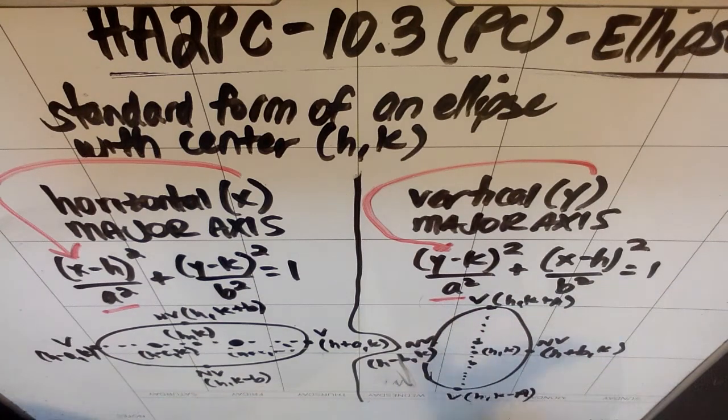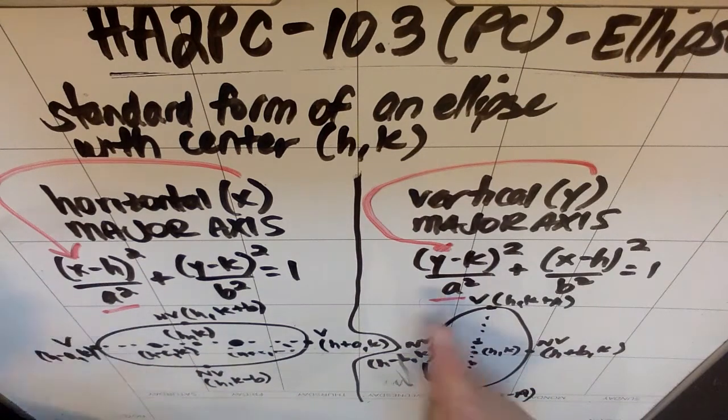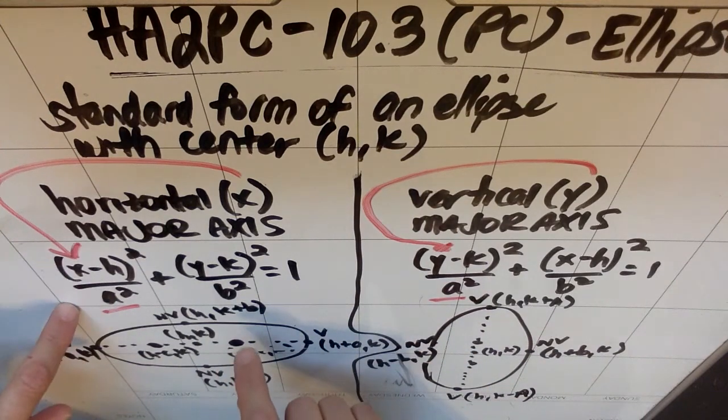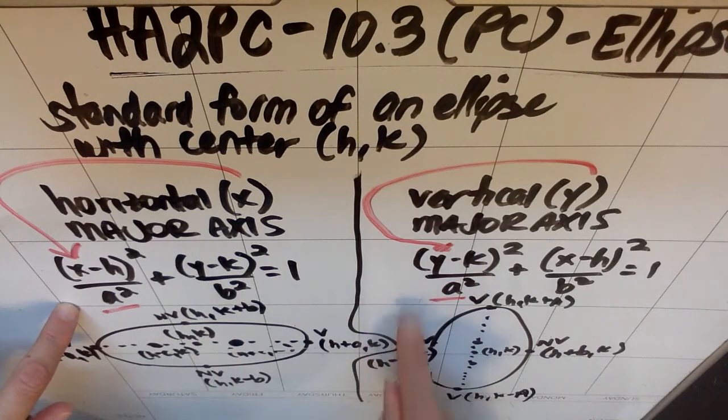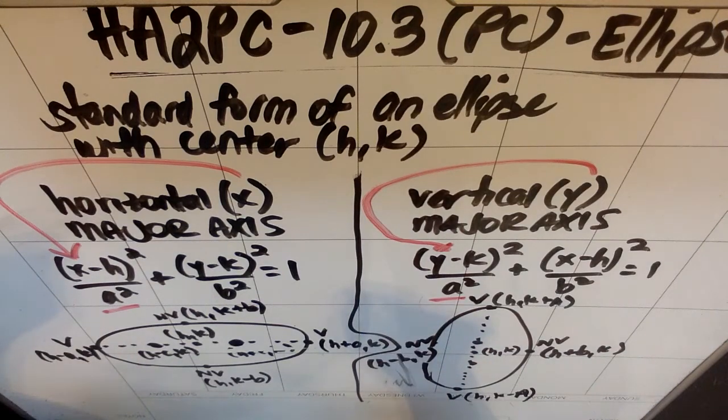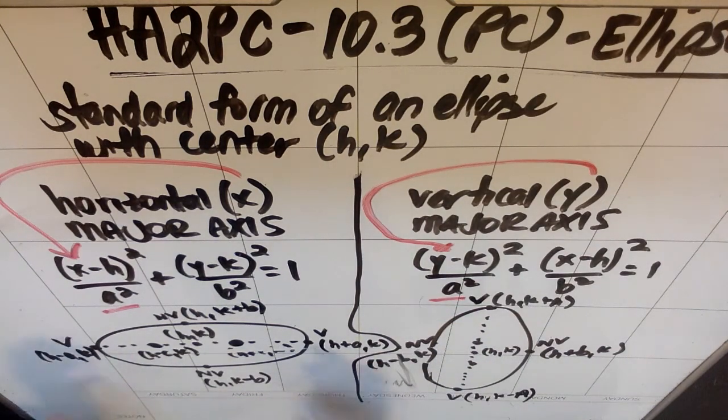In this situation the only difference between being long and skinny or tall and skinny is whether it's the x on top of the a squared or the y on top of the a squared. Also notice that because a is physically longer than b, that's why it's called the major axis and b is the minor axis.